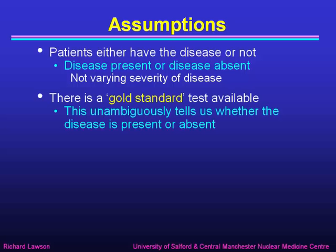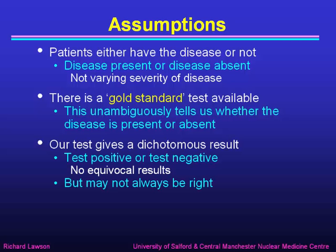We also have to assume that there is some gold standard test available. This is a perfect test that unambiguously tells us whether the disease is present or absent — the gold standard test is always right, whereas our test might be fallible. Our test has to give a dichotomous result, that is a positive or negative result with no equivocal halfway results. Again, that's not quite realistic, but we'll understand how to deal with that later on.